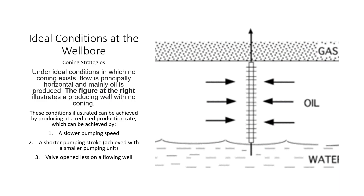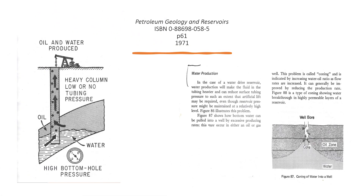On a flowing well, the valve opens less. In the case of a water drive reservoir, water production will make the fluid in the tubing heavier and can reduce surface tubing pressure to such an extent that artificial lift will be required, even though the reservoir pressure might be maintained at a relatively high level.